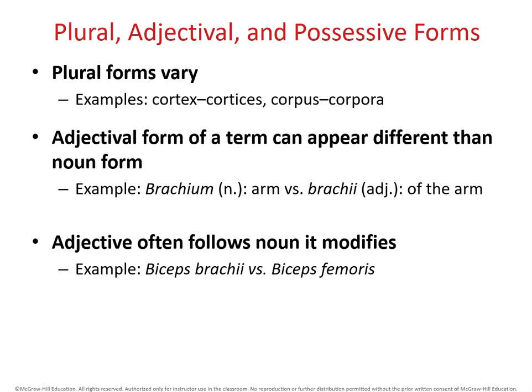So if we want to be very specific about something, we can't refer to the bicep in our arm just as the bicep. We have to include brachii in order to make it clear which bicep we're talking about, because humans technically have two.